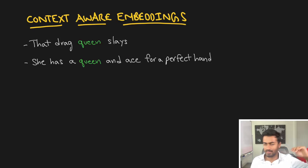All of these four Word2Vec architectures that we mentioned still have a major downside, which is context-aware embeddings. Currently with Word2Vec, we have a word and we will always get the same vector regardless of the context. However, context does matter. For example, the queen in 'that drag queen slays,' and the queen in 'she has a queen and ace for a perfect hand.' These queens are 'queen,' but they are very different in meaning.